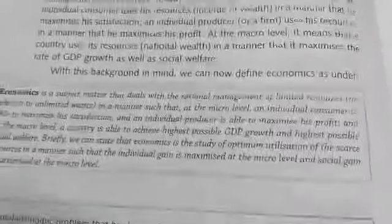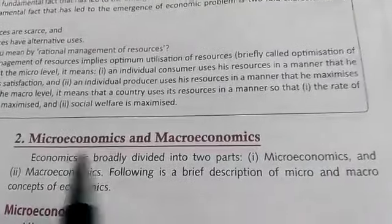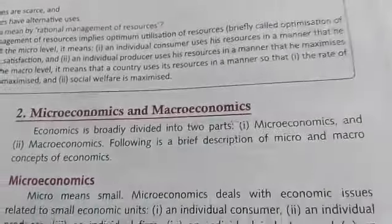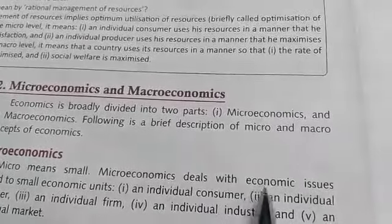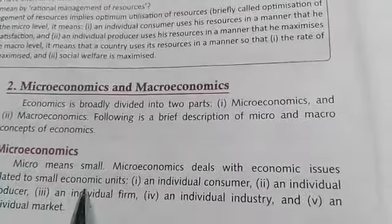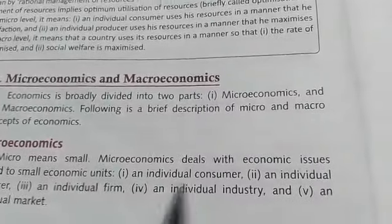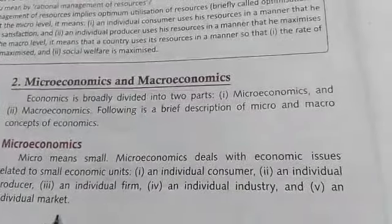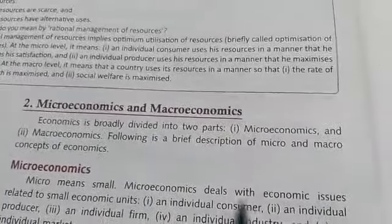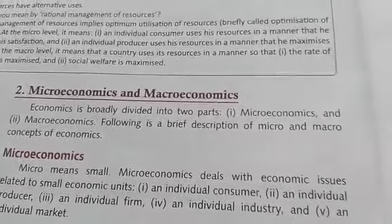Now, economics is studied under two different parts. One is microeconomics and one is macroeconomics. What is microeconomics? Micro means small, and microeconomics deals with the economic issues of the small economic units — like an individual consumer, an individual producer, an individual firm, an individual industry, or an individual market.